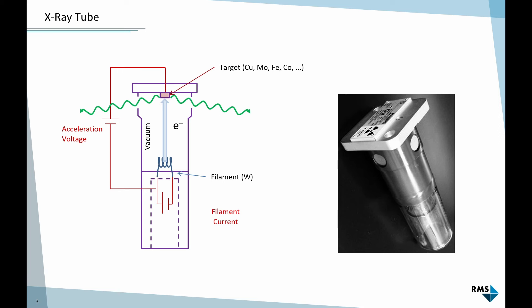In our X-ray tube, obviously, we want the X-rays to leave the tube. That is why there is a window made of pure beryllium, because it hardly absorbs any radiation, so we get good intensity. Beryllium is highly toxic, so if you ever see a tube lying around in the lab, don't touch the windows. There should be a plastic cover when you replace them, but don't touch the windows — it's toxic.